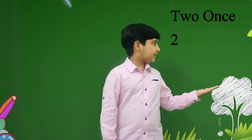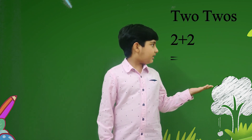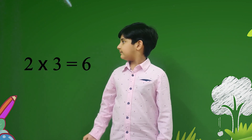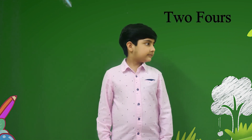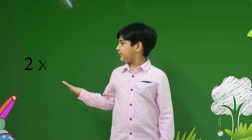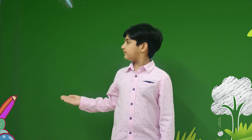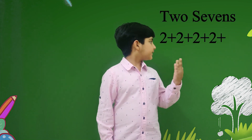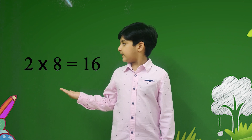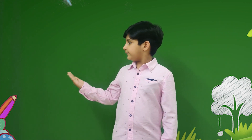Two ones are 2, two twos are 4, two threes are 6, two fours are 8, two fives are 10, two sixes are 12, two sevens are 14, two eights are 16, two nines are 18, two tens are 20.